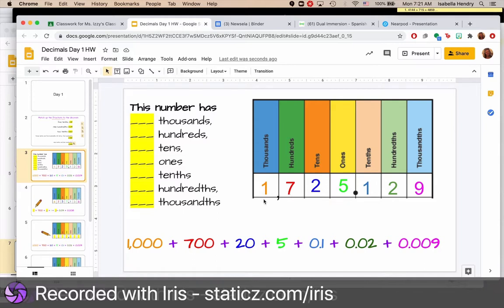So you match your fractions to your decimals, and then you're going to practice breaking down a decimal. So with this number, you'll say this number has one thousandth, seven hundredths, two tens, five ones, one tenth, two hundredths, and nine thousandths.